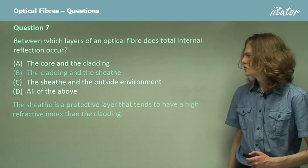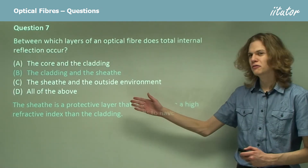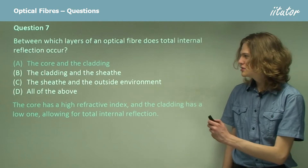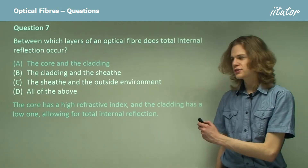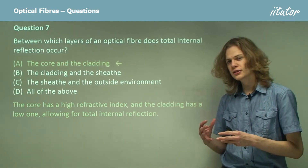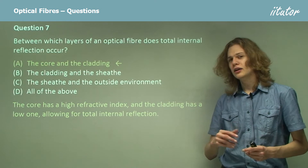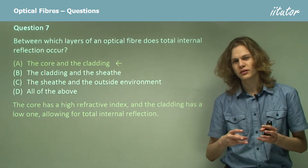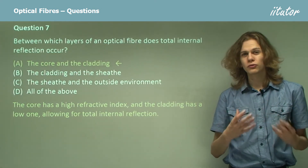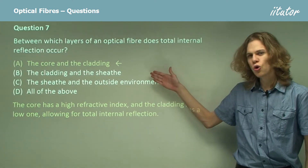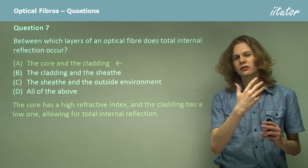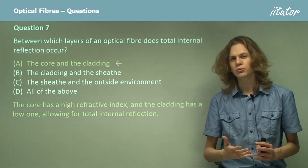How about the cladding and the sheath? The sheath is a protective layer around the optical fiber and it doesn't actually have anything to do with total internal reflection — we don't need to worry about its refractive index. So the answer is A: the core and the cladding. The core must have a very high refractive index and the cladding around it must have a very low refractive index. Total internal reflection occurs within the core as light tries to pass from the core into the cladding but is unable to.